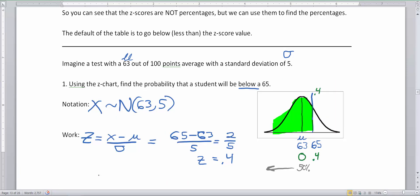We have just now went to the table. From the table, and I want you in your notes to write down from table because sometimes when we look back you may not know where it came from. From table, you got a value of 0.65542, but we're going to round to three decimal places. Therefore, 65.5% is below 65 on the test.